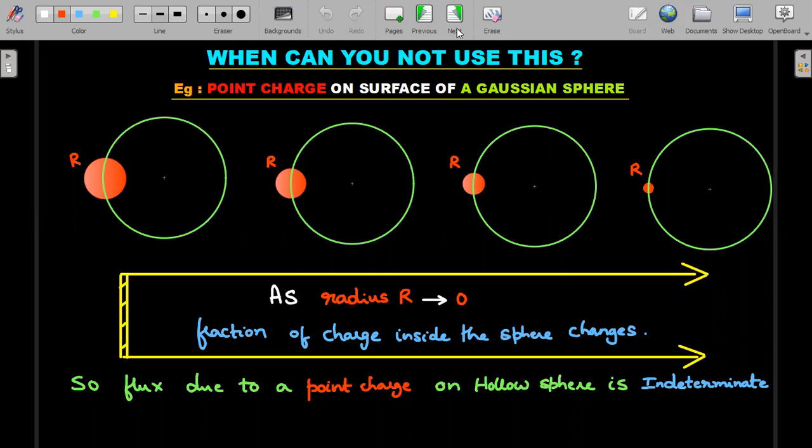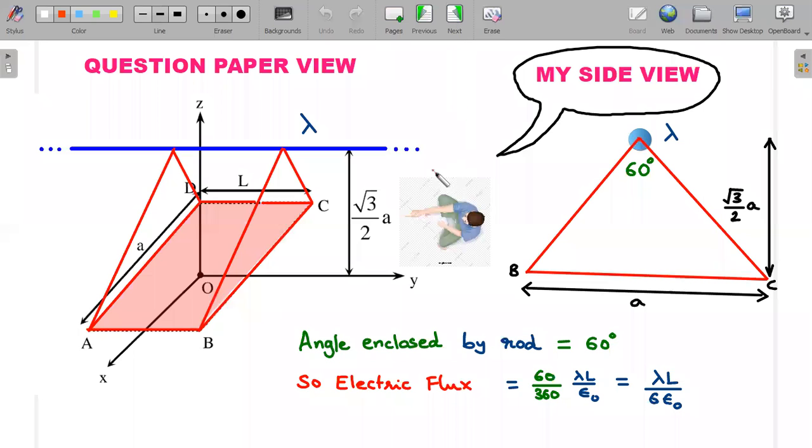Does the IIT JEE problem fall under the determinate case, and how do you manipulate that? Here's the solution. A lot of things on the board - just follow my lead. On the left side, I've drawn the question paper view of the diagram. I've shaded some important regions: this ABCD plane through which flux is being asked, and also the line charge λ, the infinitely long wire drawn in blue.